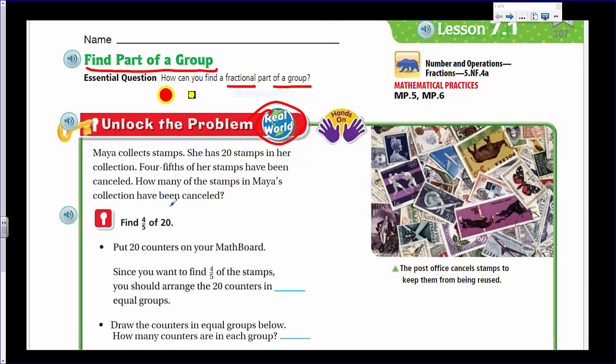It says here, Maya collects stamps. She has 20 stamps in her collection. Four-fifths of her stamps have been canceled. How many of the stamps in Maya's collection have been canceled? The post office cancels stamps to keep them from being reused. So they cancel them and put their little black stamp on top. It basically says, find four-fifths of 20. So we're finding four-fifths of that amount.